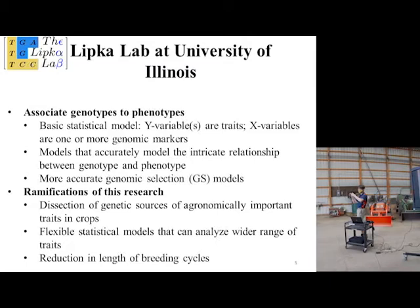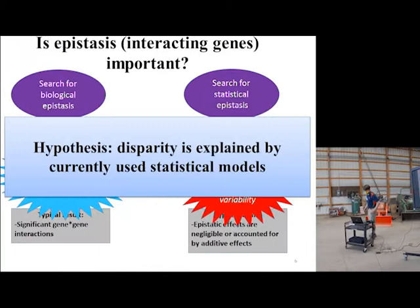We'll be able to run more flexible models that can capture a wider range of traits. And genomic selection — I'll provide a brief introduction later in this presentation — if we develop more accurate genomic selection models, this can result in a reduction in the breeding cycle.